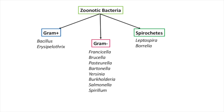The gram-negative zoonotic bacteria include Francisella, Brucella, Pasteurella, Bartonella, Yersinia (especially Yersinia pestis), Burkholderia, Salmonella, and Spirillum.